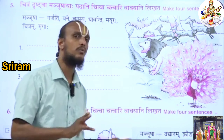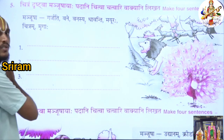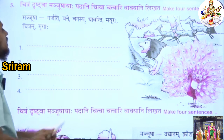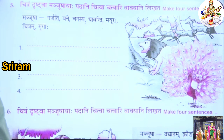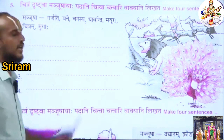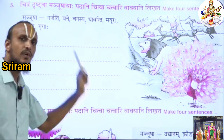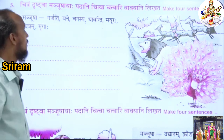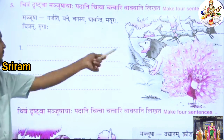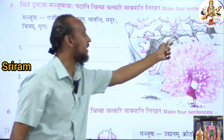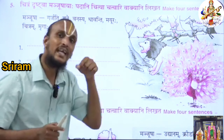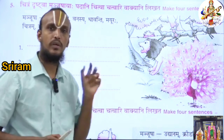Then go for the Manjusha, the clue box. The words given here are: Garjati, vane, vanasiya — means of the forest — Dhavanti means running, Mayuraha means peacock, Chitram means picture, and Mrgaha means deers. By using these words, you can easily frame four sentences. You can also add some more words of your own.